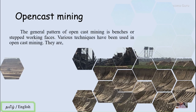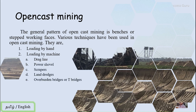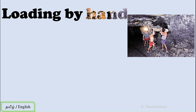The general pattern of open cast mining involves benches or steps as working faces. Various techniques have been used in open cast mining. The first is loading by hand — used in the manual method where trucks may transport but humans lift the broken rock to the truck. The second is loading by machine, with five subcategories: dragline, power shovel, scrapers, land dredges, and overburden bridges. The third is glory hole, then kaolin mining as practiced in Cornwall, and strip mining.